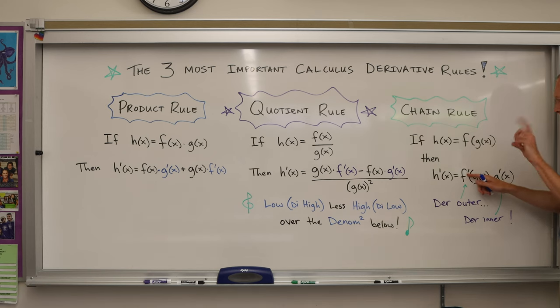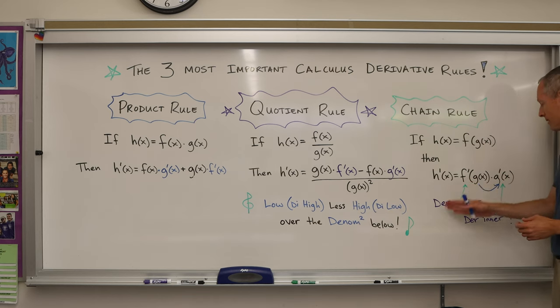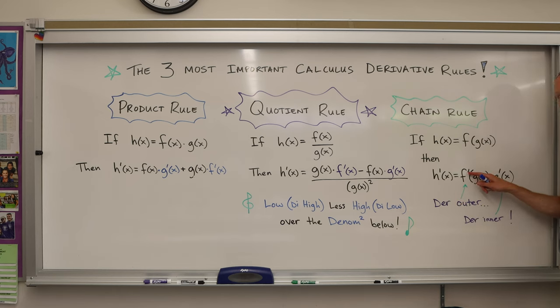The rule for this one is you take the derivative of the outer one, f prime, and then the inner function stays g(x), and then you link on the derivative of the inside. That's why they call it the chain rule, like a chain link fence. The memory device for this one is der outer der inner. It almost sounds like German. Der stands for derivative, so der outer der inner. Look, I did the derivative of the outside part first, f prime, I don't touch this, I leave g(x), but then I link on the derivative inside, der inner.